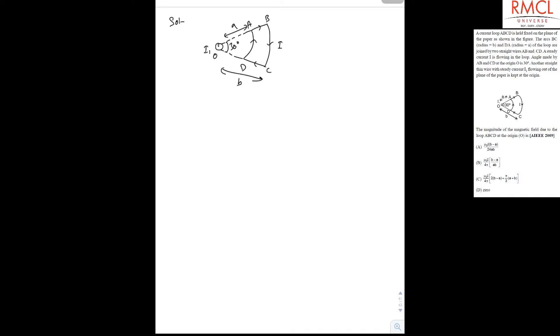Now the question is the magnitude of the magnetic field due to the loop ABCD at the origin. So if you find out the magnetic field at O due to this loop, we can see the limbs AB and CD make zero angle with the point O, so the magnetic field due to AB and CD will be zero. So now we have to find the magnetic field only due to AD and BC, the arcs AD and BC.